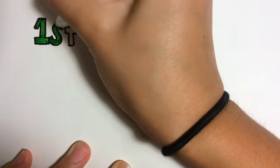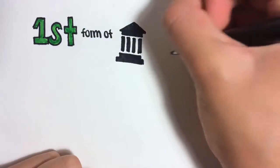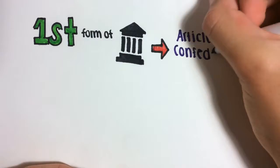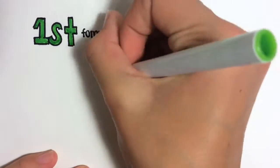The first American form of government were the Articles of Confederation. It established basic functions of the new American government after gaining independence from Great Britain.